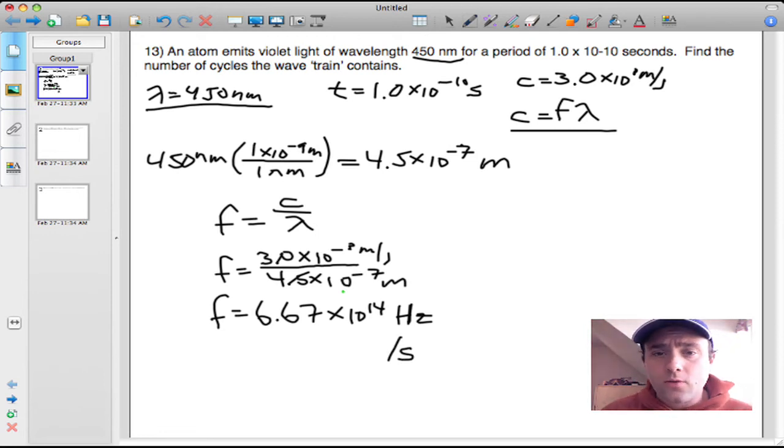Now the question asks for how many cycles, or how many times up and down in the wave train. You have a number in seconds. If you multiply that by the frequency, you get the number of times that wave vibrates up and down.